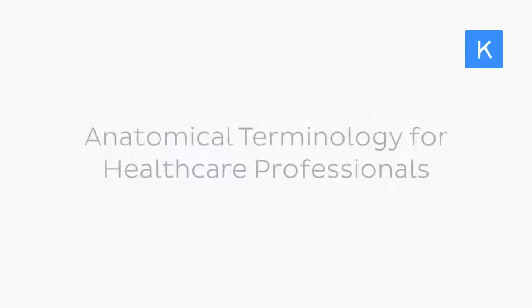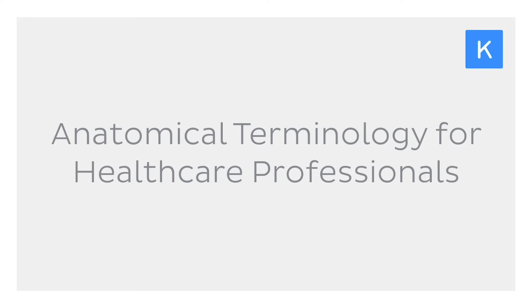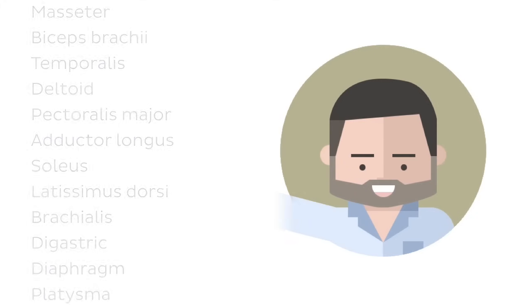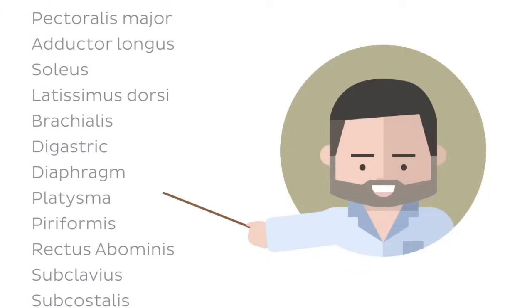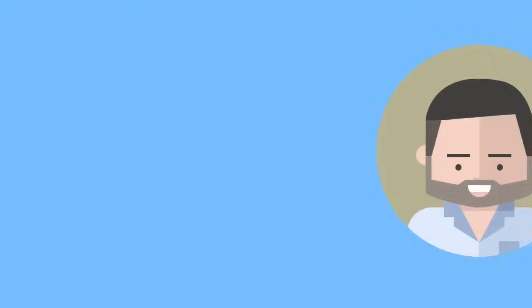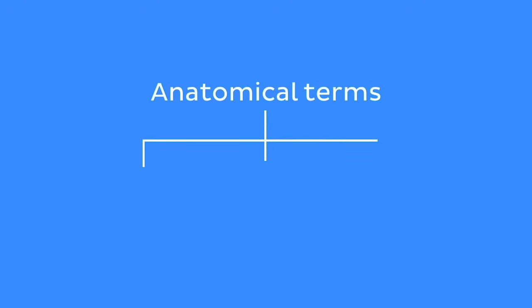Welcome back to the fourth episode of the KenHub series, Anatomical Terminology for Healthcare Professionals: Getting buff with muscular terminology. So, if you've watched the previous episodes of this series, you'll know that instead of helping you memorize the name of every single muscle, we're teaching you about how they're named. We do that by breaking down anatomical terms into their main components: